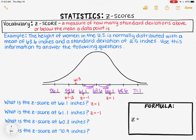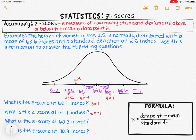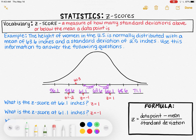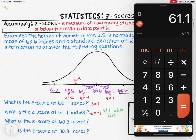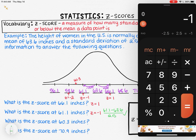The formula to find the z-score of any data point is: z equals the data point minus the mean, divided by the standard deviation. Before applying it to 60.3, let's verify the formula using 61.1, which we already know has a z-score of negative one. Taking 61.1 minus the mean of 63.6, then dividing by the standard deviation of 2.5, gives us negative one. The formula works.